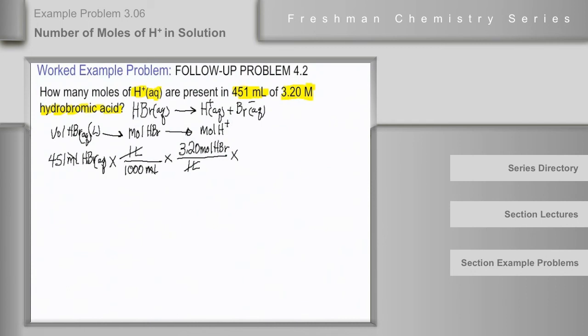To moles of H plus. And we notice that each mole of HBr produces 1 mole of H plus, so that's a 1 to 1 ratio. This gets rid of moles of HBr. Our answer then will be in moles of H plus, and that will be 1.44 moles of H plus aqueous.